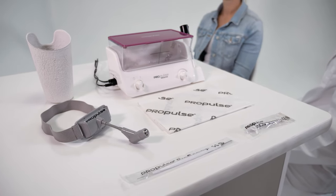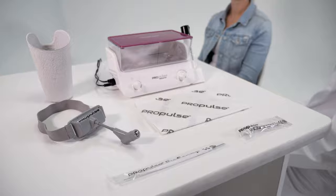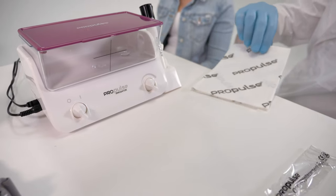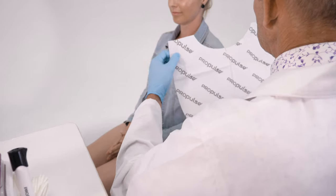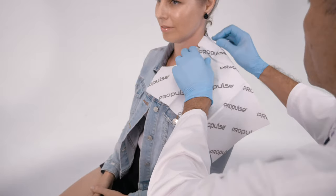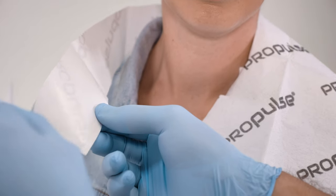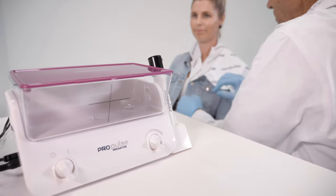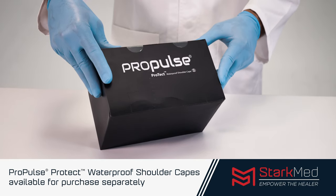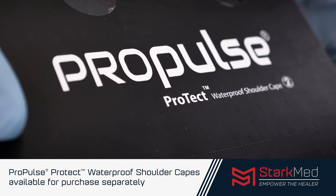With the practitioner and patient sitting at the same level, a waterproof shoulder cape is applied around the patient's neck. This ensures they will be kept dry from water and debris. The single-use ProPulse Protect waterproof shoulder capes are available for purchase separately.